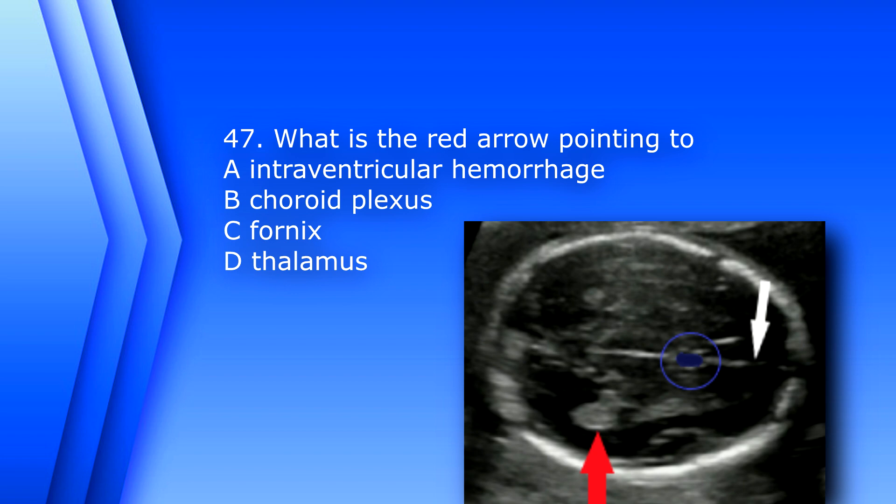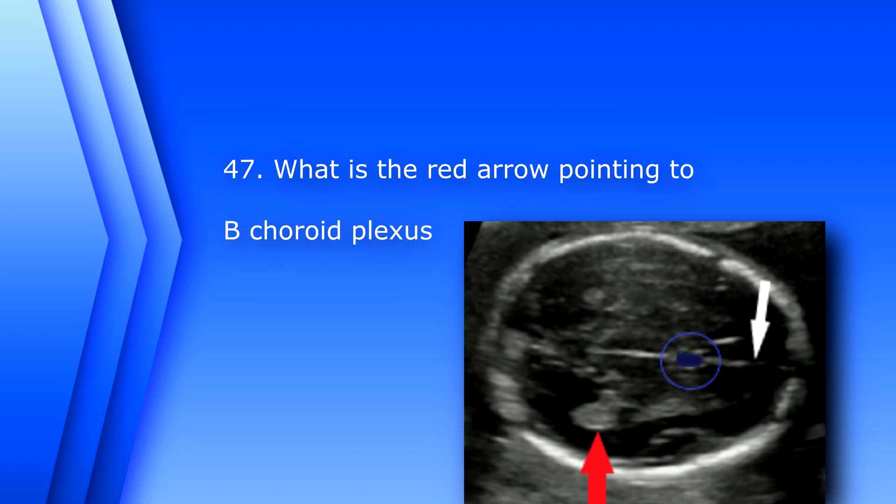Question 47: What is the red arrow pointing to? A) intraventricular hemorrhage, B) choroid plexus, C) fornix, or D) thalamus. The answer is B, choroid plexus.